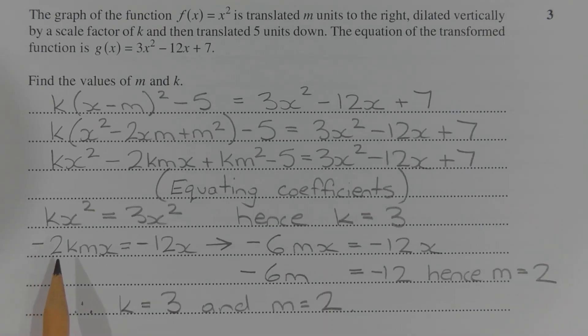and negative 2kmx is equal to negative 12x. Since k equals 3, this becomes negative 6mx equals negative 12x, which means that negative 6m is equal to negative 12, hence m equals 2.